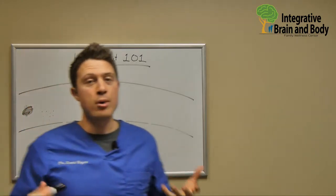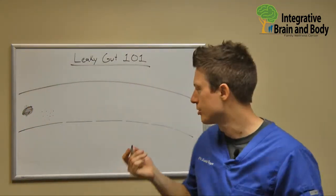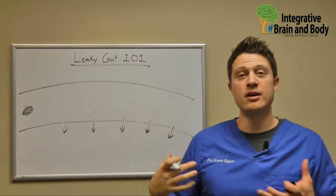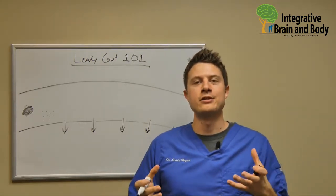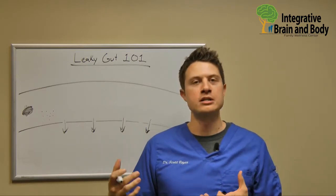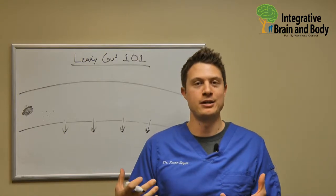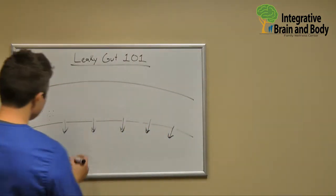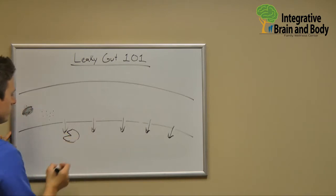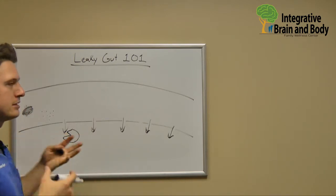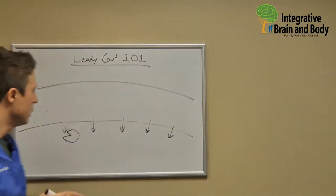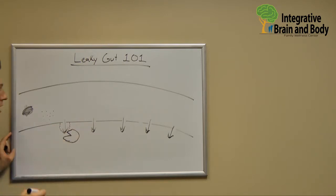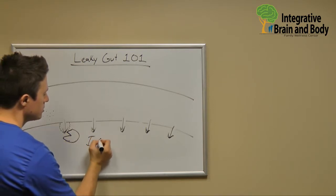Our body loses the ability to pick and choose what it pulls into the bloodstream, and now things just start pouring into our bloodstream unannounced. If something gets into our bloodstream where our body doesn't give it the green light, it's our immune system's job to patrol the area and determine whether it is a benign particle or a foreign invader. Our immune system arrives to the scene of the crime and creates a little microscopic pocket of swelling — that microscopic pocket of swelling is also known as inflammation.